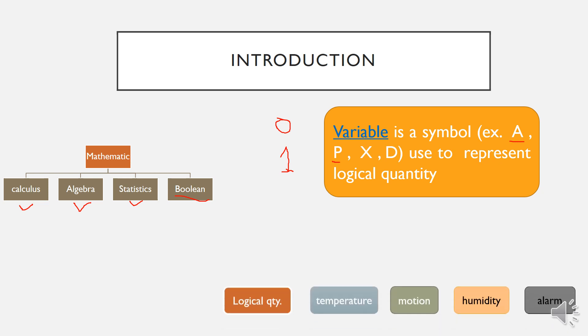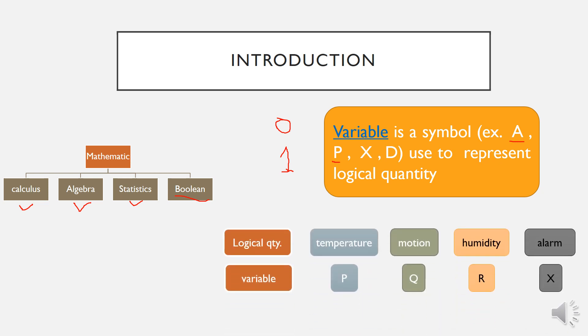This is an example of how we can use symbols to represent logical quantity which is known as variable. For example, we have a logical quantity such as temperature, motion, humidity, and alarm. We can use symbols such as P, Q, R, or X to represent each of the logical quantity. For example, P for temperature.